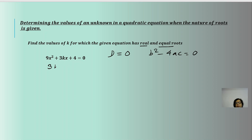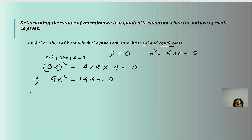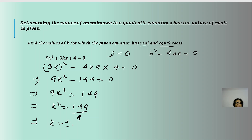So b² - 4ac becomes (3k)² - 4(9)(4) = 0, which gives 9k² - 144 = 0. This implies 9k² = 144, so k² = 144/9, and therefore k = ±12/3 = ±4. Both values k = +4 and k = -4 will give real and equal roots.